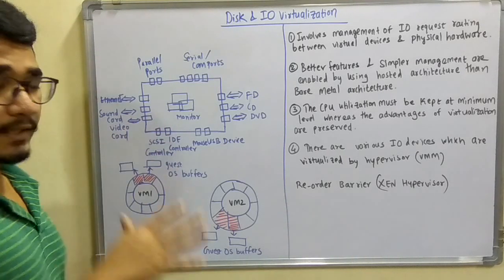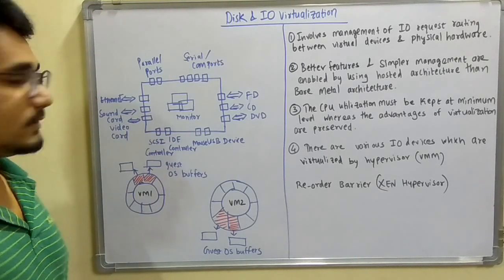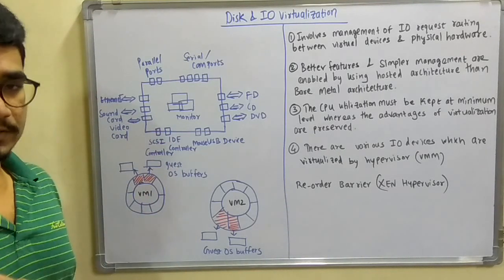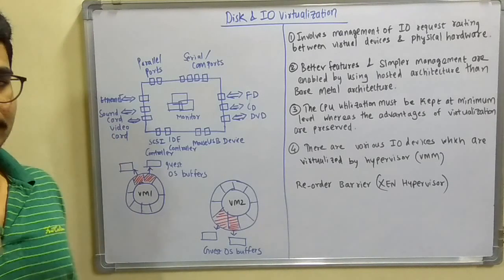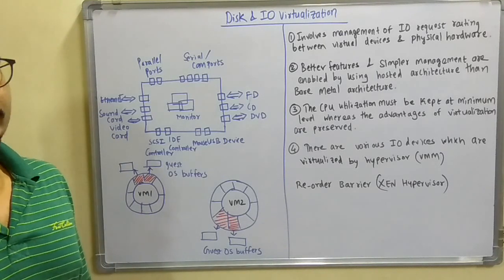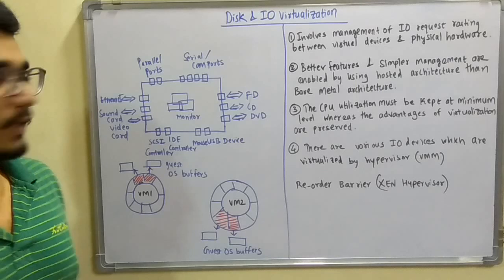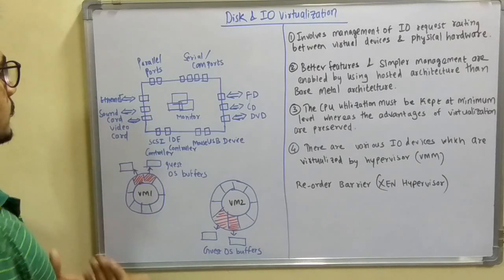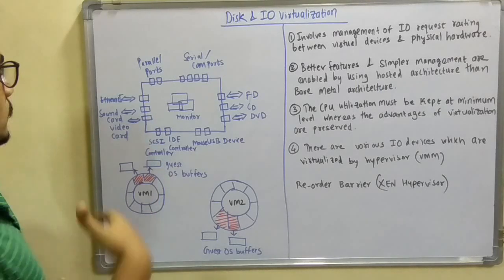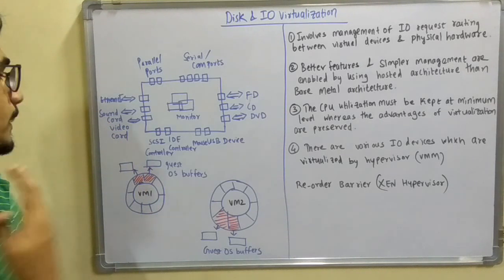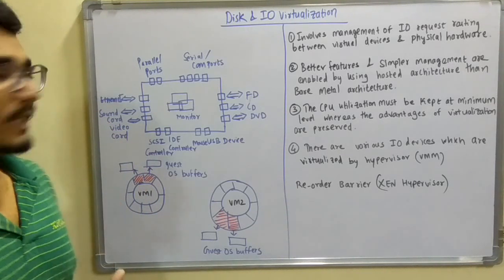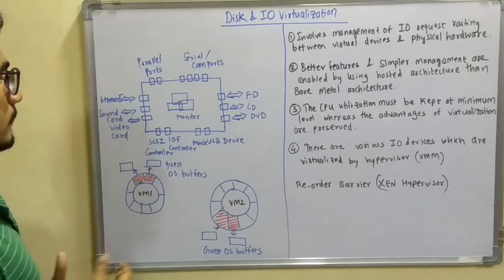At the lower end you have the USB device, micro USB Type-C devices or ports, then the mouse, then the IDE (Integrated Development Environment) for PCB and circuit boards, and the SCSI controller (Small Computer System Interface) for high-speed ethernet. At the left side you have the video card, sound card for MP3/MP4 formats, and finally the ethernet for accessing the internet.